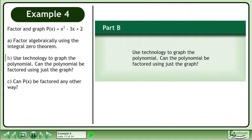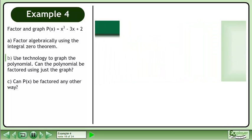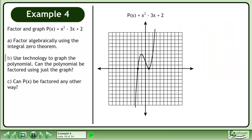In part B, use technology to graph the polynomial. Can the polynomial be factored using just the graph? Use your graphing calculator to obtain the graph. The graph lets us quickly find the x-intercepts at negative 2 and 1.